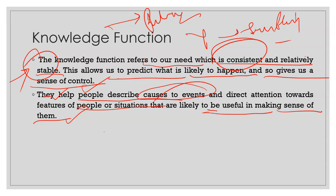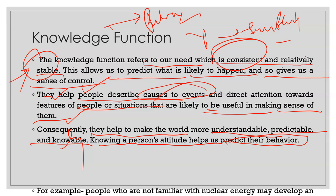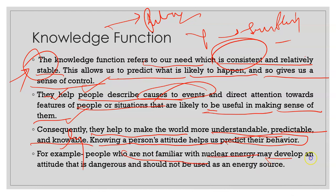We try to accept those things which are consistent and stable with our knowledge. This helps to make the world more understandable, more predictable, and knowing a person's attitude helps us in predicting their behavior. For example, people who are not familiar with nuclear energy may develop an attitude that it is dangerous and should not be used as an energy source. But people who are educated about nuclear energy may treat it as having positive outcomes as well. So we always try to remain consistent with our knowledge.